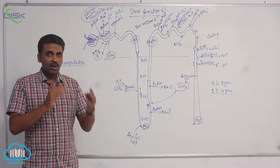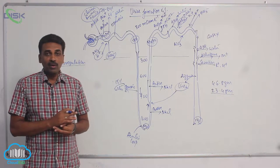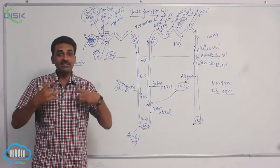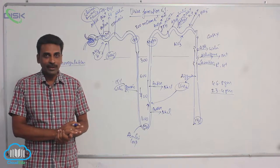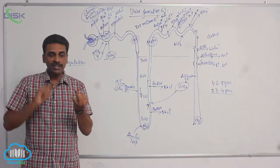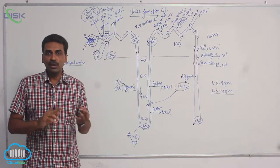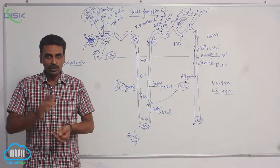So kidneys are homeostatic organs. They maintain constancy of internal chemical environment by pushing out extra salts, by pushing out extra water. And they also push out the waste - urea, uric acid, creatinine, these wastes are pushed outside.